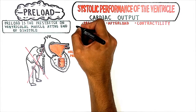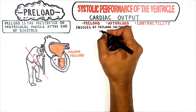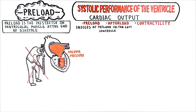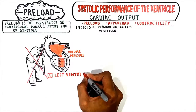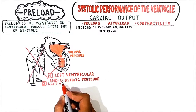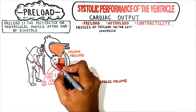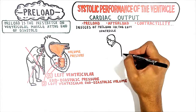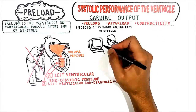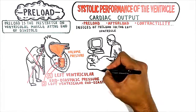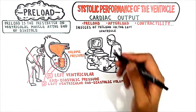This brings us to the indices of left ventricular preload. The best indices are those measured directly in the ventricle, like left ventricular end-diastolic pressure and left ventricular end-diastolic volume. End-diastolic volume is the amount of blood in the ventricle at the end of diastole, just before contraction, and it is the best index of preload because it is most easily measured in clinical practice using echocardiography.